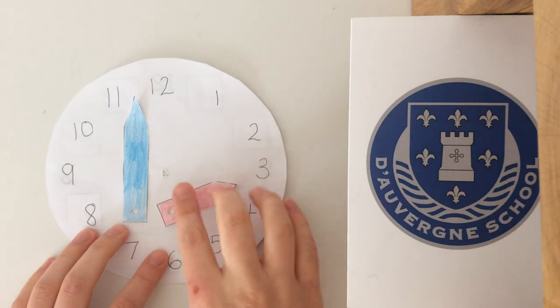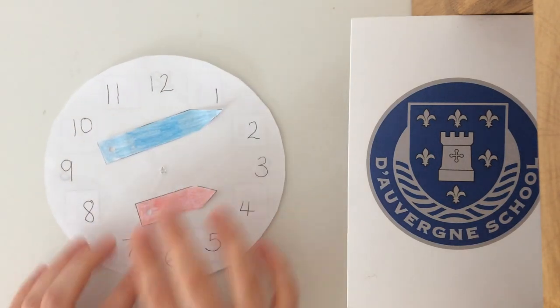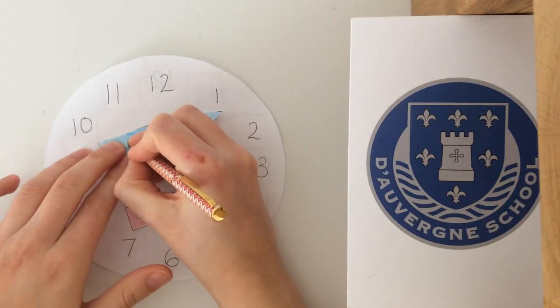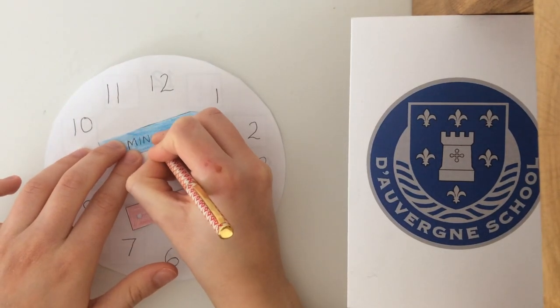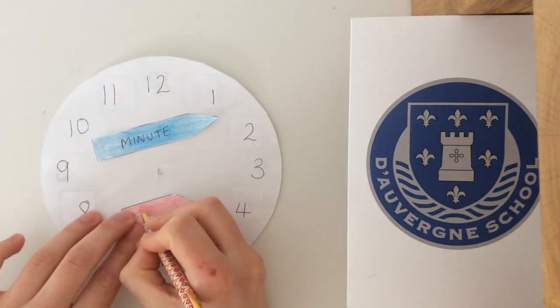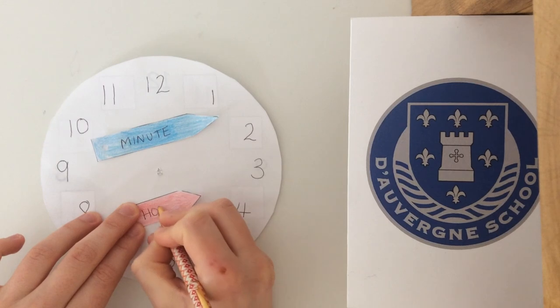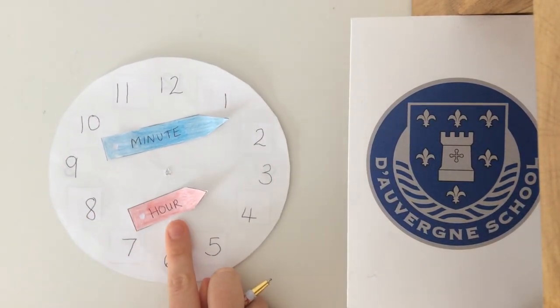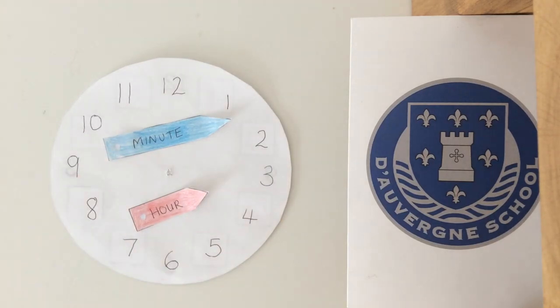Now you've made those, we need to identify which hand is which, which one is the minute hand, which one is the hour hand. Our longer hand is our minute hand, and our smaller hand is our hour hand. The small hand points to the hour and the big hand points to the minute.